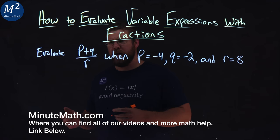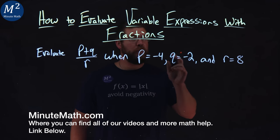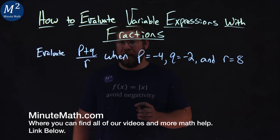We're given this problem right here. Evaluate P plus Q over R when P equals negative 4, Q equals negative 2, and R equals 8.